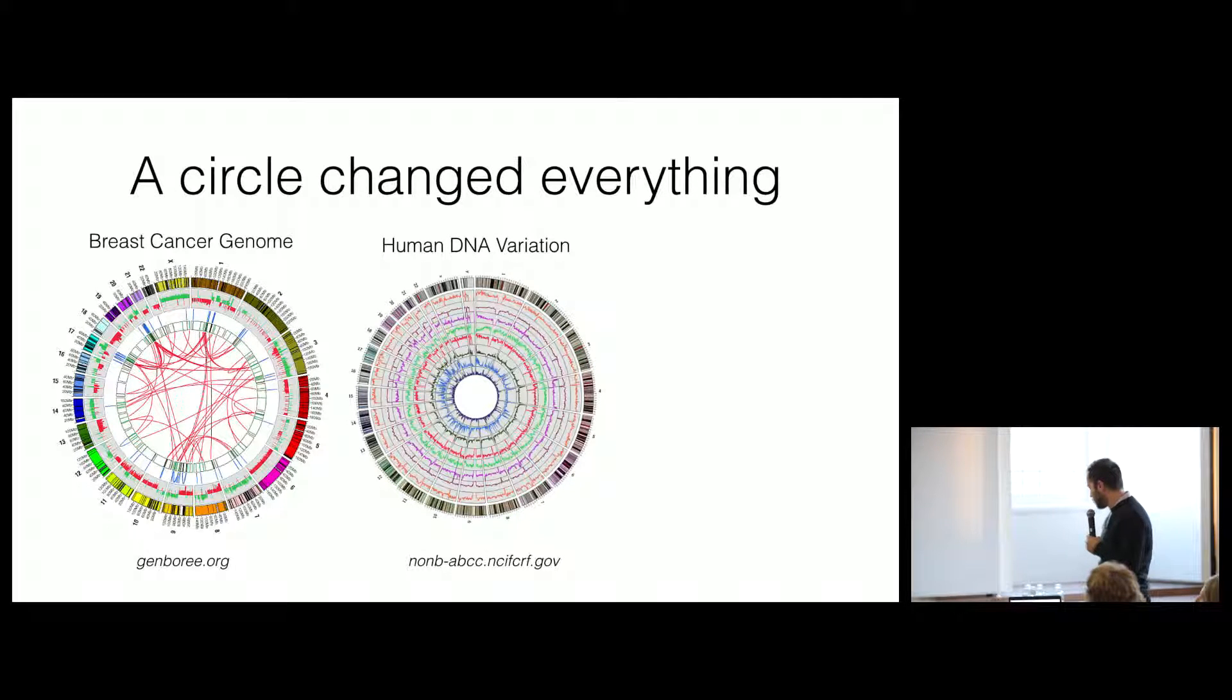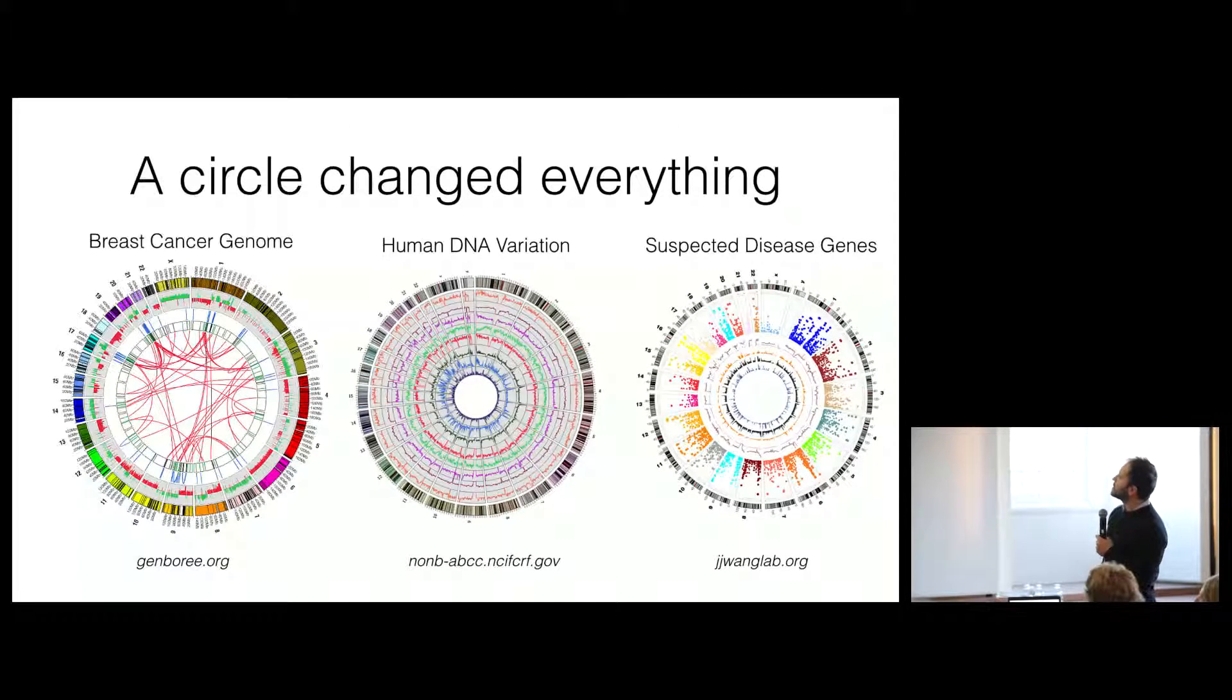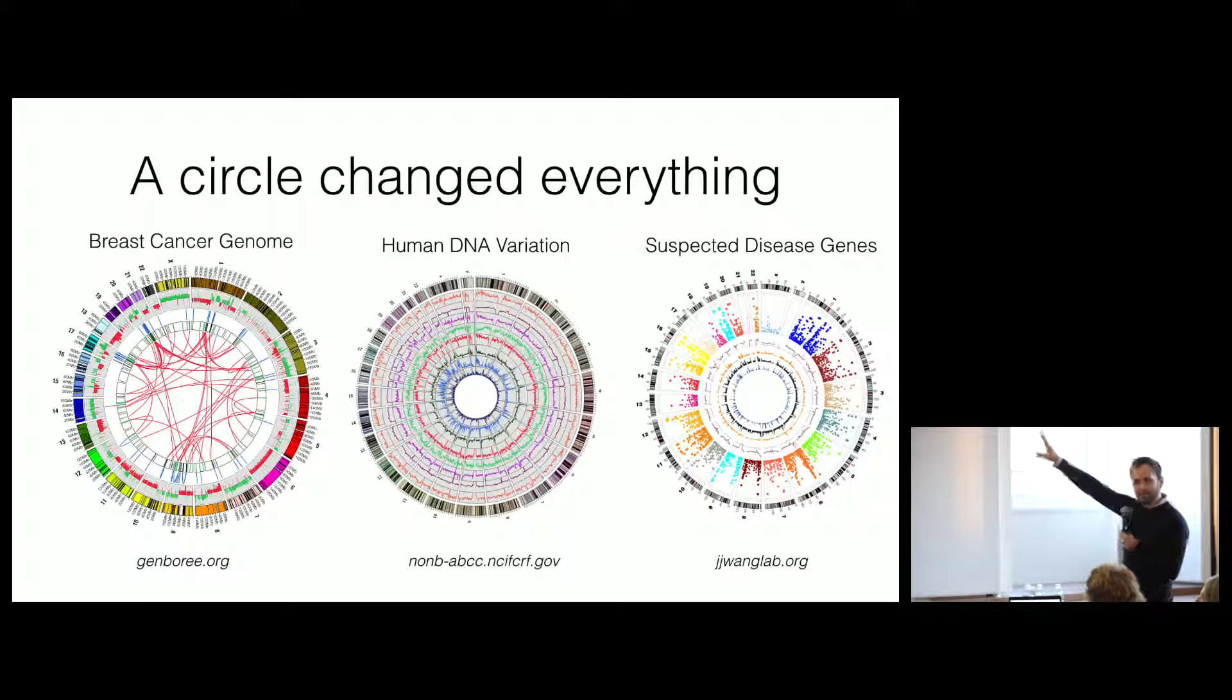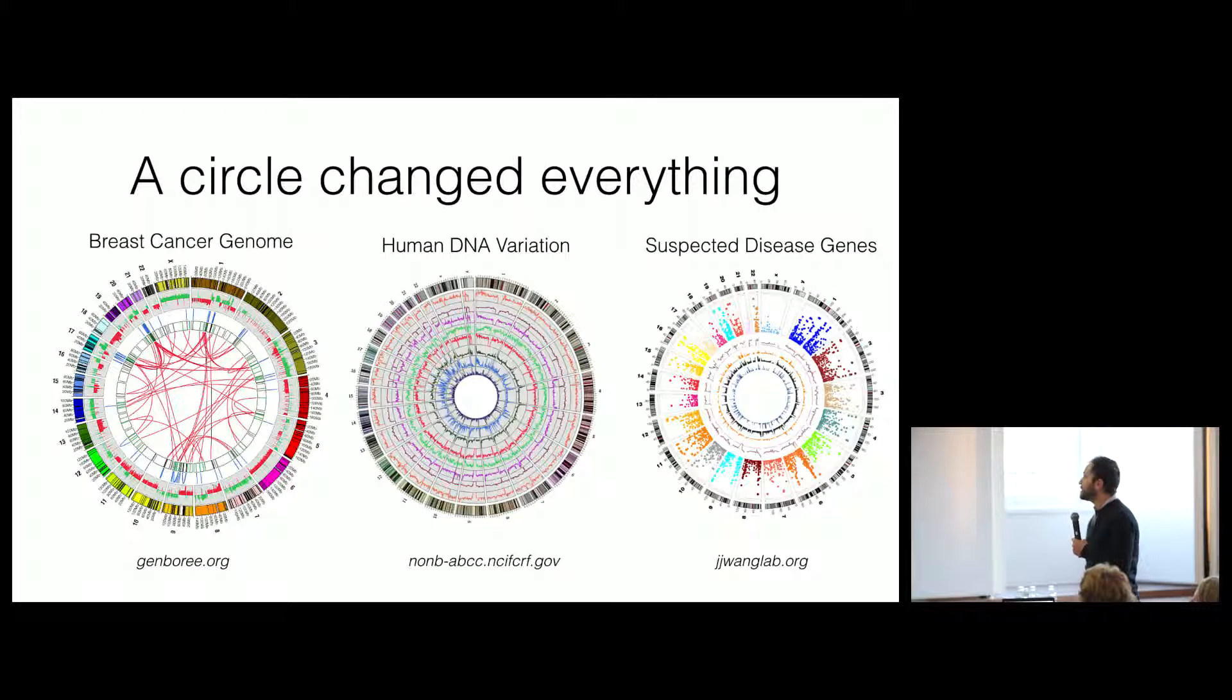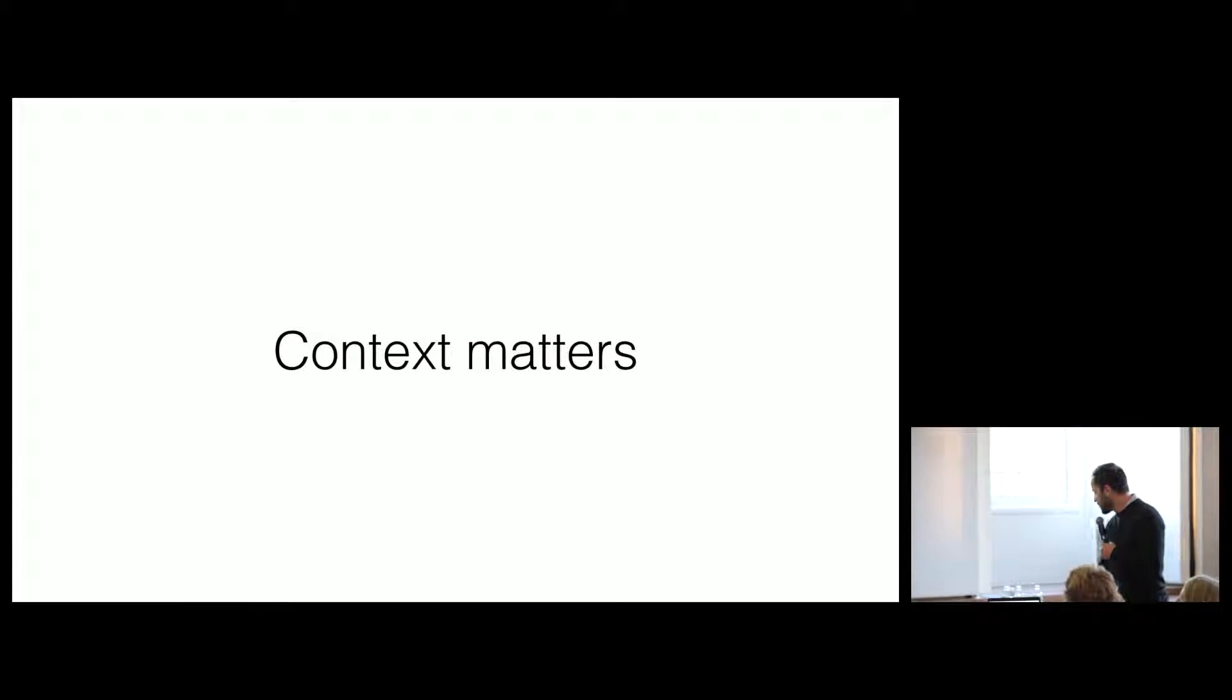They're used for a really wide range of visualizations. And here we are representing all human DNA variation. Here we're representing the variance in the human genome that contributes to disease. So all the disease genes that are known in humans. So basically, context matters a lot.